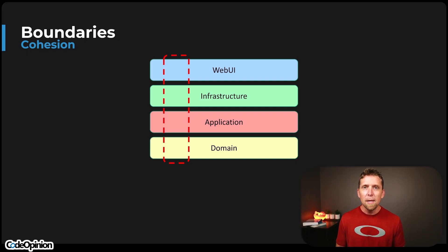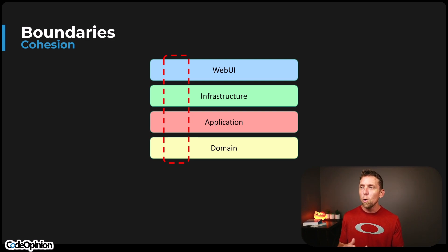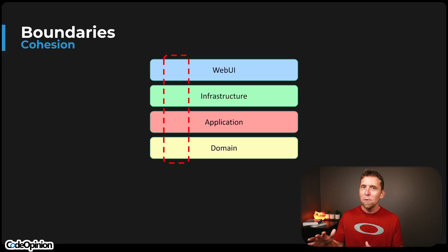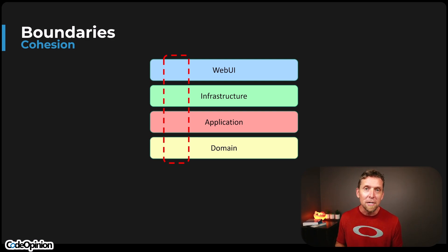The problem with this diagram is solely focusing on the technical concerns of what we're trying to do. Vertical slices, again, is about capabilities. That's not to say that we're ignoring the technical concerns — this could be a monolith, this could be microservices — that's not really the point. What we're really trying to describe by taking this slice out is we want to take a slice of capabilities.